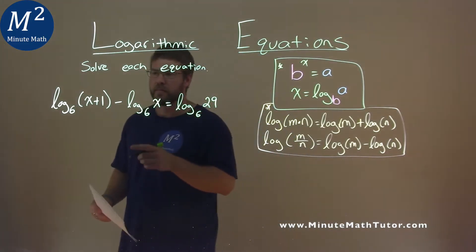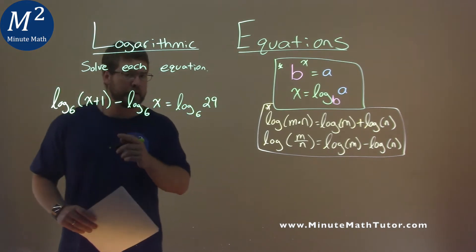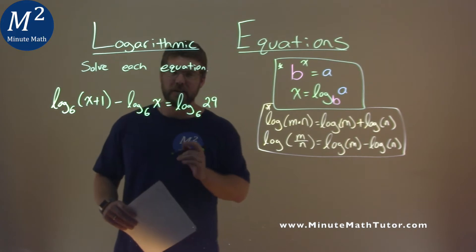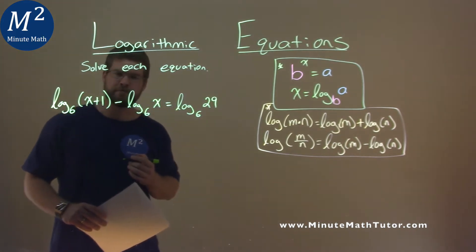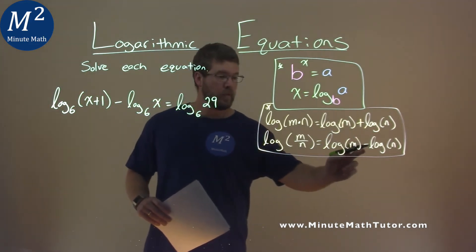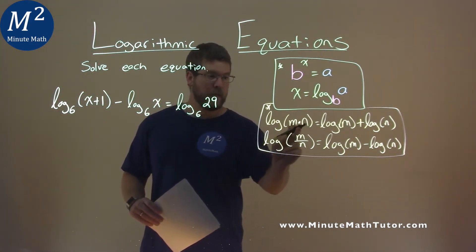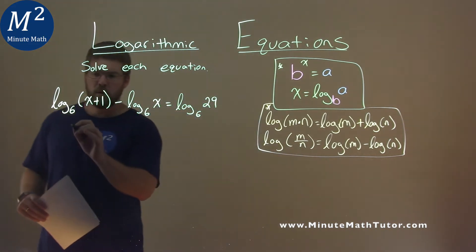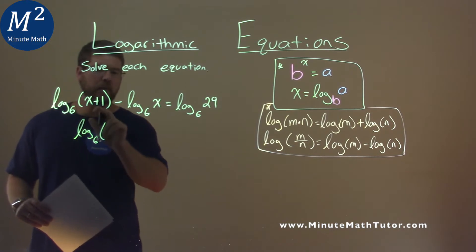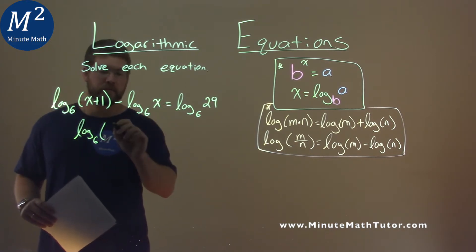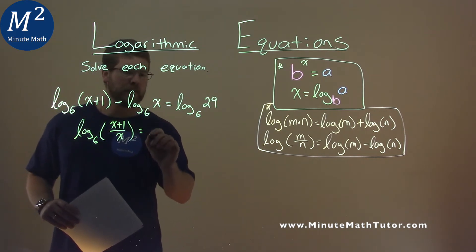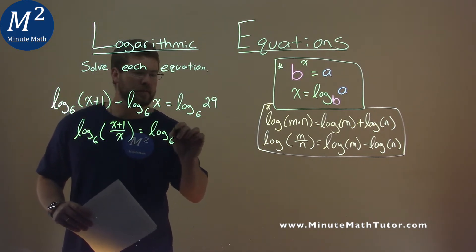We're given this problem right here: log base 6 of x plus 1 minus log base 6 of x is equal to log base 6 of 29, and we're going to solve this equation. Our rules tell us when we have logs with the same base and we're subtracting them, we can combine them as one logarithm and divide the insides. So we're going to take the left-hand side, log base 6, and combine these two insides with division: x plus 1 over x. And that's equal to log base 6 of 29.